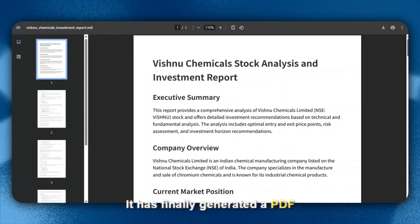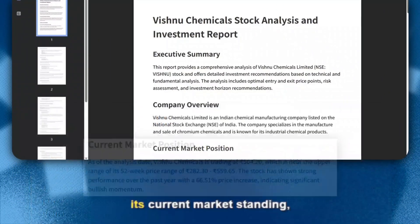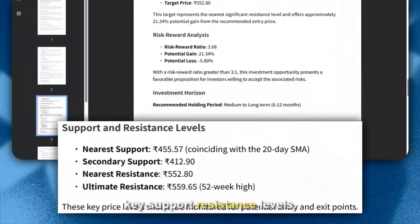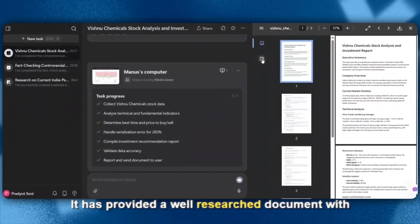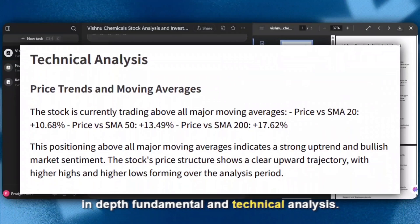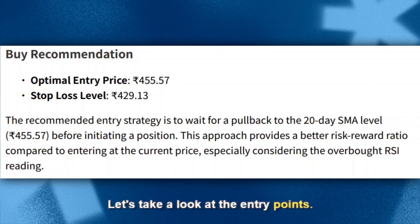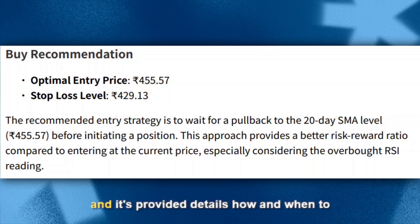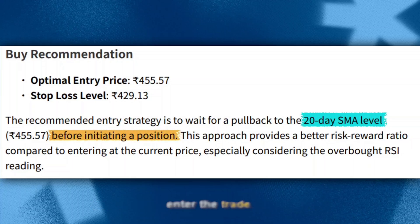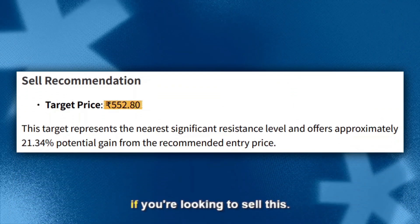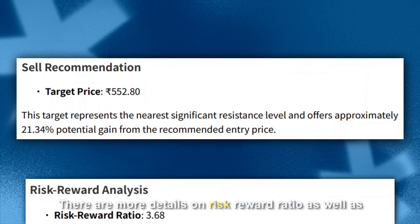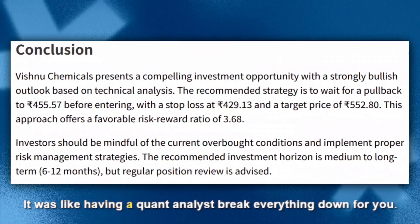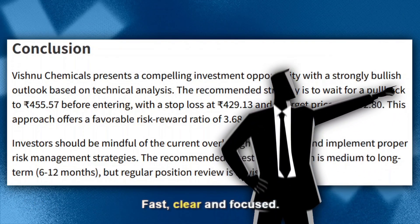It has generated a PDF that compiles the fundamentals of the company, its current market standing, price trends, signals from momentum indicators, volatility, and key support and resistance levels. Looking at the entry points, it suggested a buy level with a stop loss at 429.13, provided details on how and when to enter the trade, and recommended a target price for selling. There are also details on risk-reward ratio and risk factors, ensuring you don't jump into trades blindly — like having a quant analyst break everything down: fast, clear, and focused.